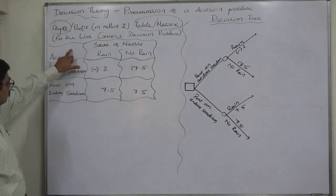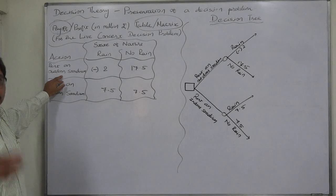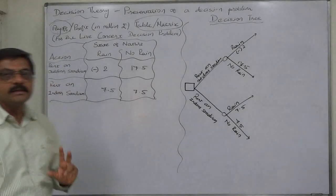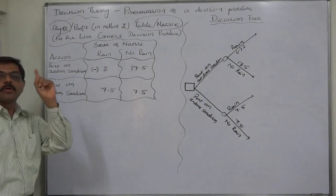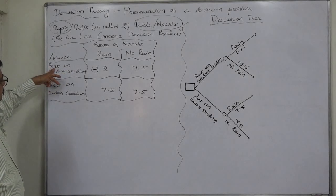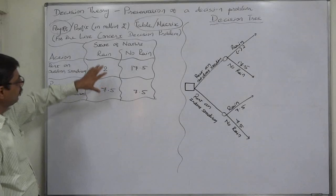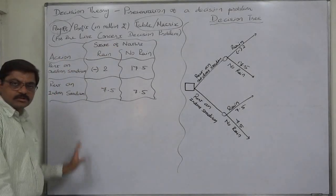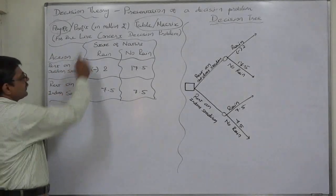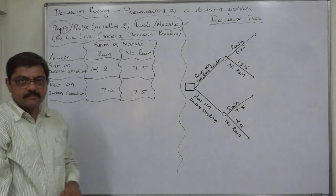This column shows the two possible alternatives or actions or acts or strategies out of which the decision maker needs to select only one at a time. We can present these two in the columnar form also and we can also present the states of nature in this column. It is not mandatory to present action here and state of nature here only. We can interchange them also.